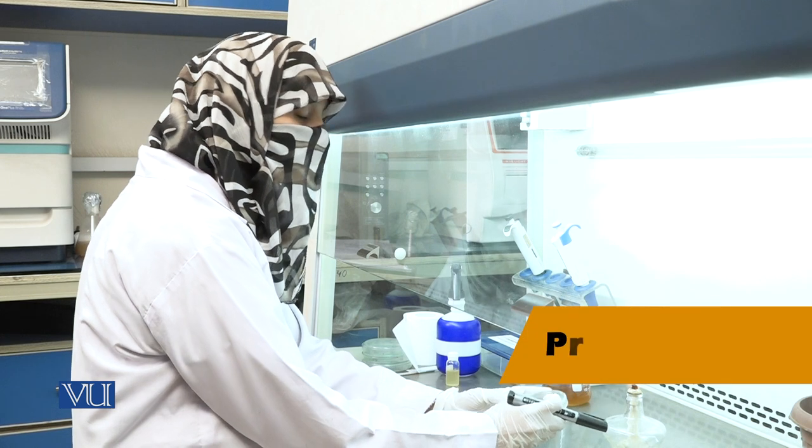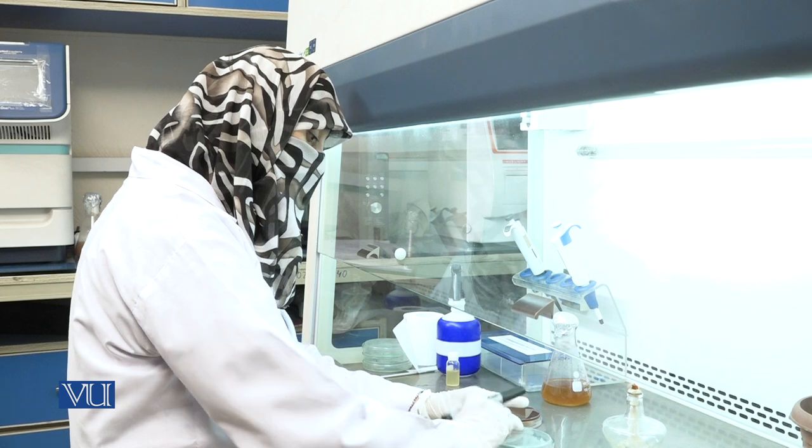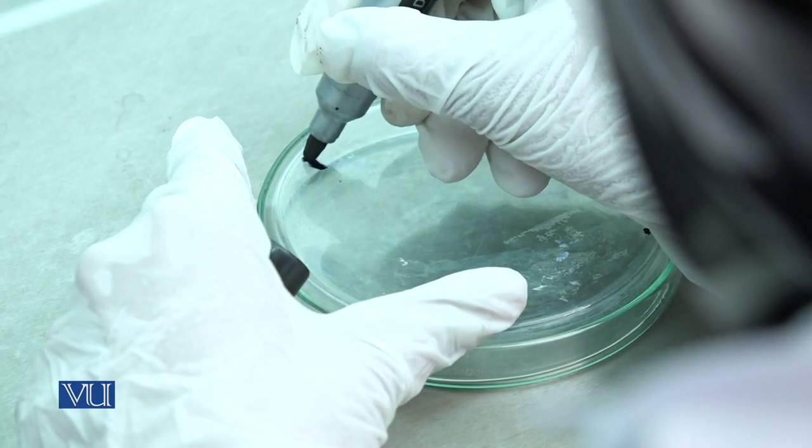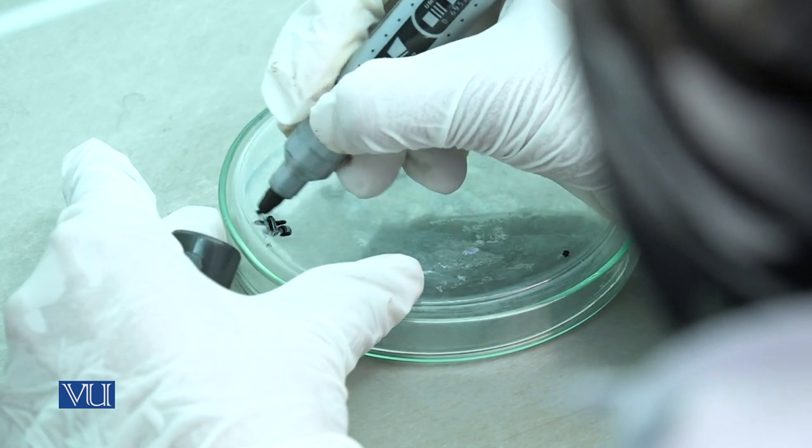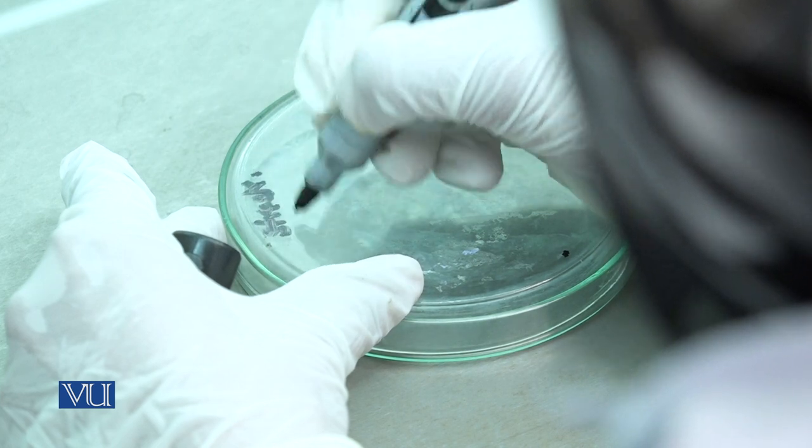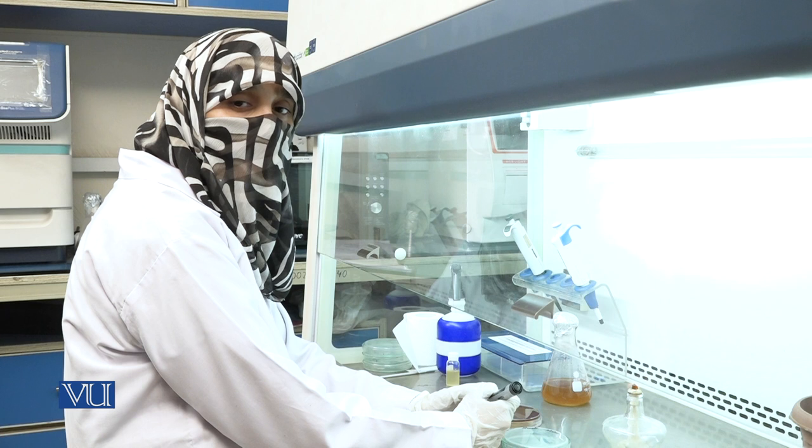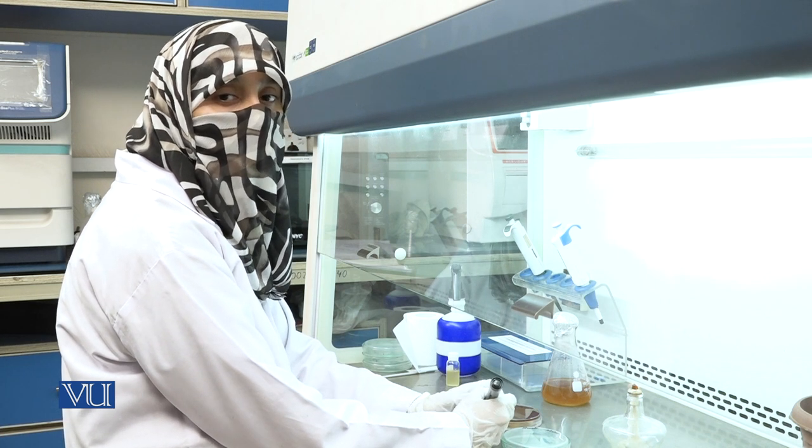First, we will discuss streak plate method. For streak plate method, following procedure is used. Label the petri plate with isolation method and date. This will help to identify the microorganisms, and although it may take some time, it will help to avoid big mistakes later on.